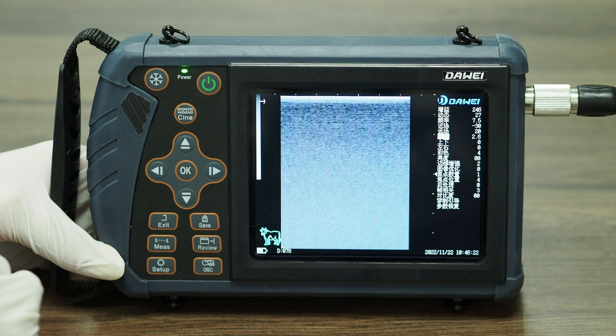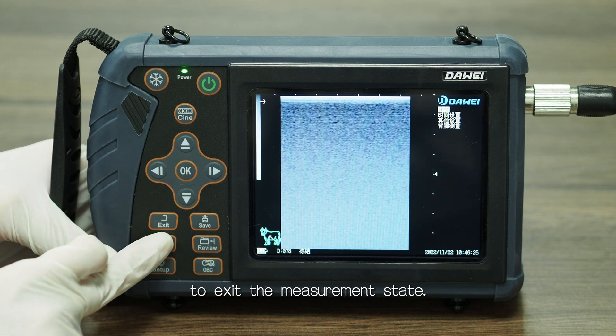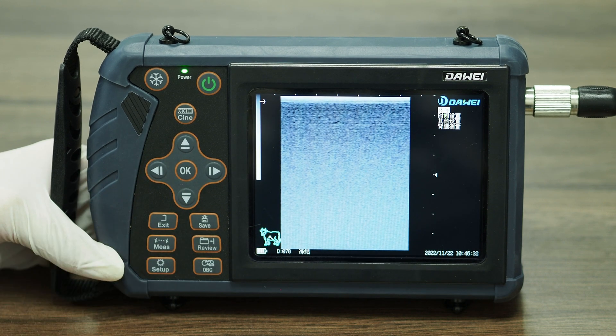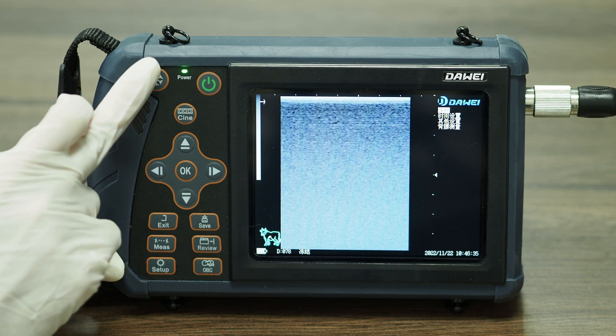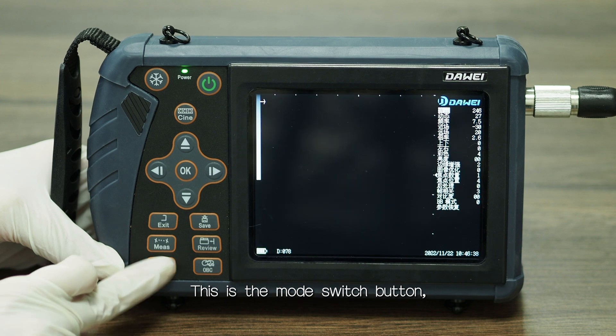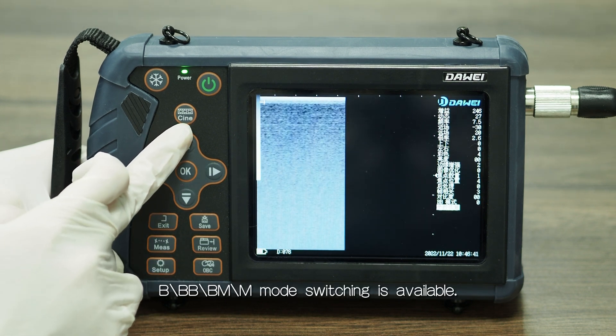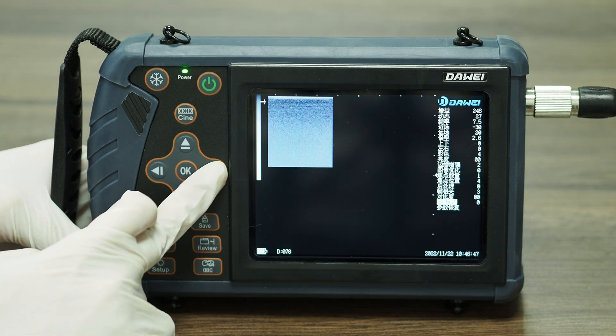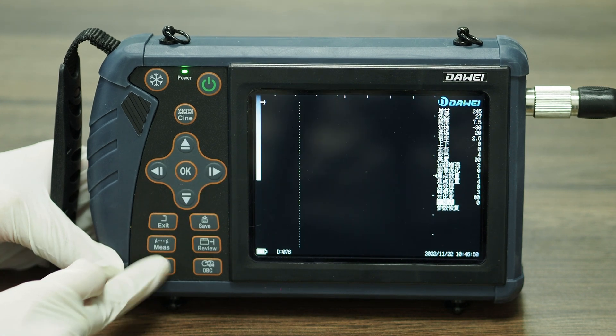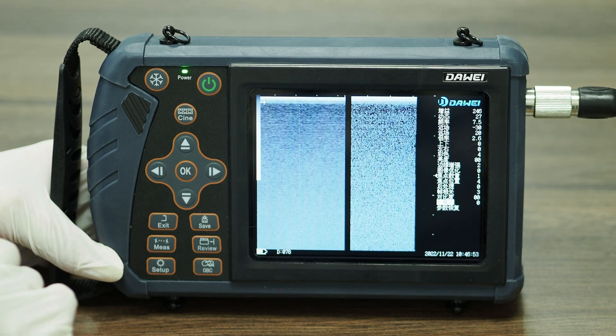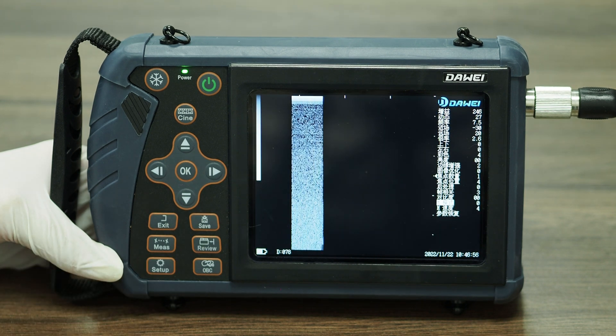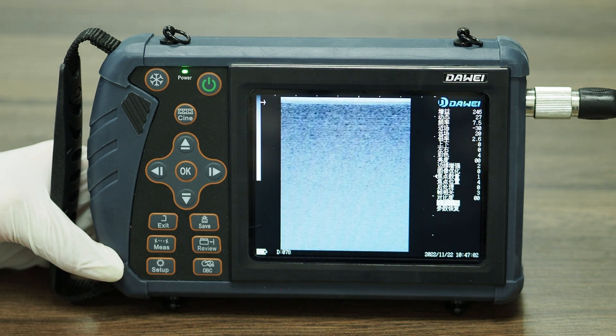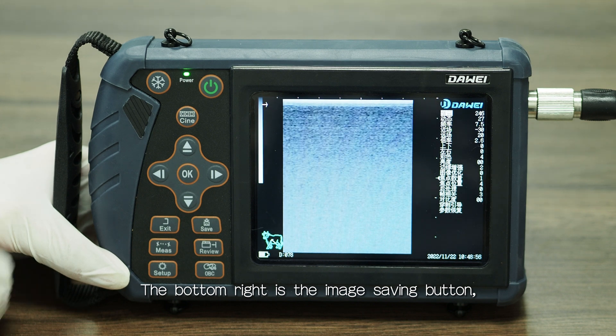This is the mode switch button. BP, VP, and PMM mode switching is available. The bottom right is the image saving button.